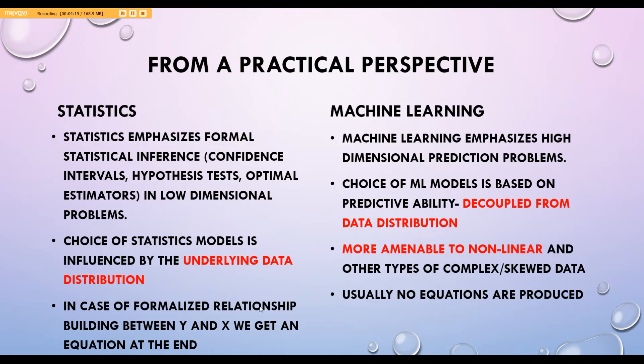In case of statistics, we get a formalized relationship between Y and X in form of an equation at the end. When we worked with linear regression, we got an equation at the end. But in machine learning, usually no equations are produced. What we have is that we have trained a machine learning system that is going to predict on unseen data, and the upshot is how well your machine learning system predicts unseen data.